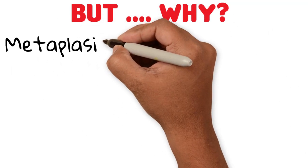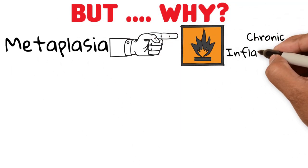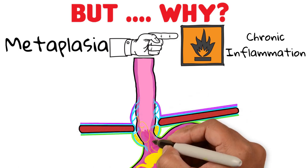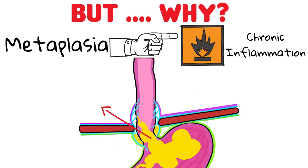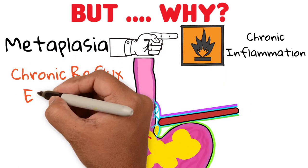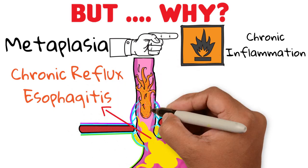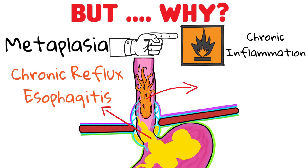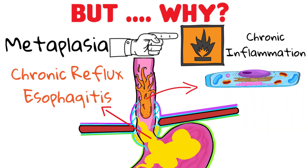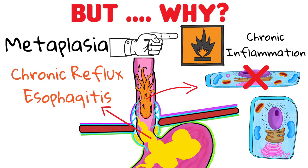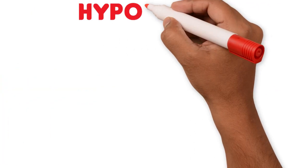Metaplasia is commonly a consequence of long-standing inflammation. In the esophagus, it is caused by recurrent reflux of gastric acid or bile, which leads to chronic reflux esophagitis. The esophageal mucosa is being burned. The normal response would be to generate more squamous cells to heal that burn, but for reasons not well understood, columnar cells are generated through metaplasia. There are some hypotheses as to how this happens.